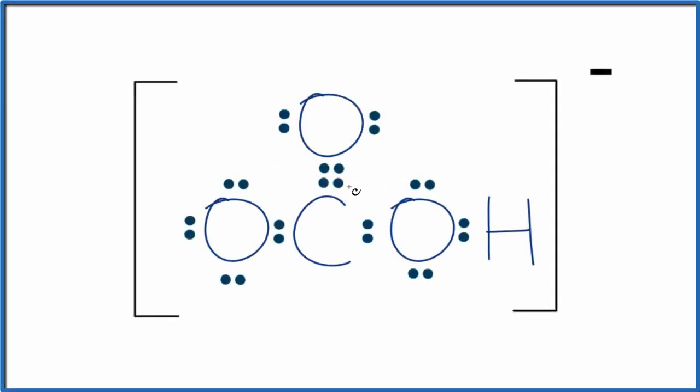Let's take a quick look at the resonance structures for HCO3 minus, the bicarbonate ion. We have our Lewis structure here with brackets around it, and this negative is one minus because it's an ion.